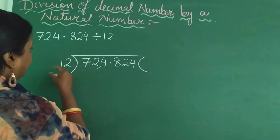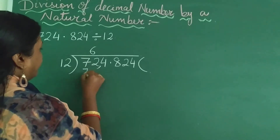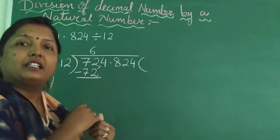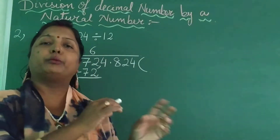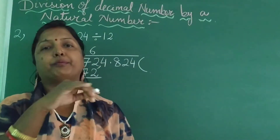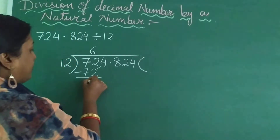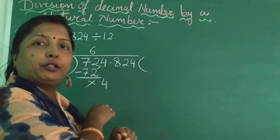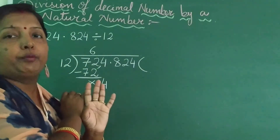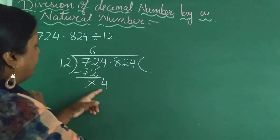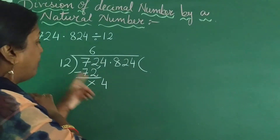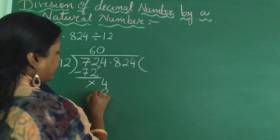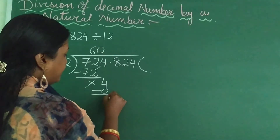We will first take 72. 12 times 6 are 72. So the remainder is 0. As I said, if the remainder is 0, you may write 0, or you can simply put a cross. Now the 4 comes down. 4 is still before the decimal point, so the decimal point will not be put in the quotient. Now, 4 is smaller than 12. We will have to go for 12 times 0. 12 zeros are 0. Subtract — the remainder is 4.